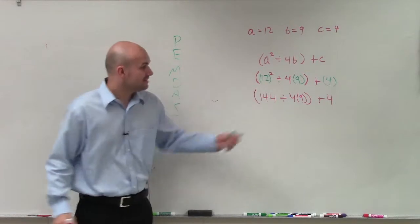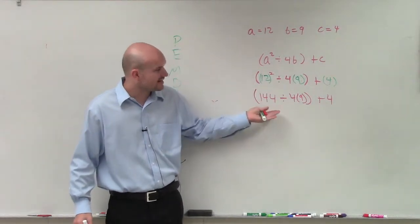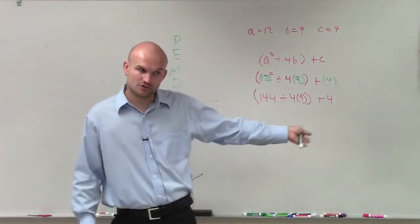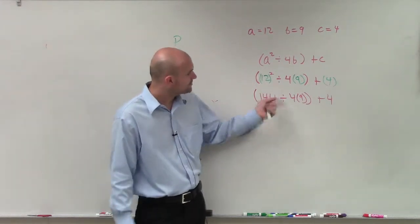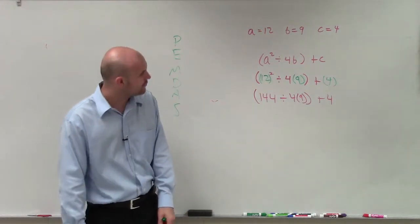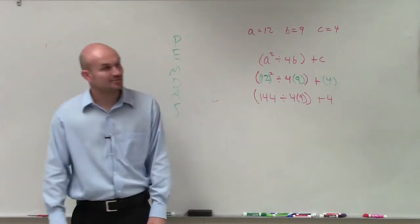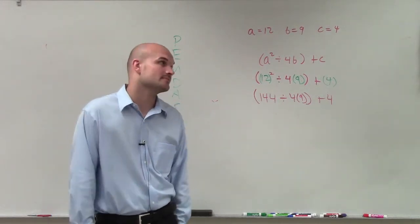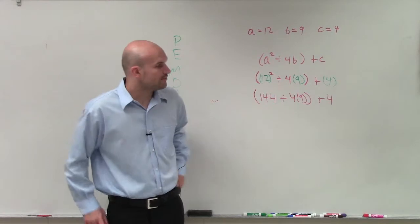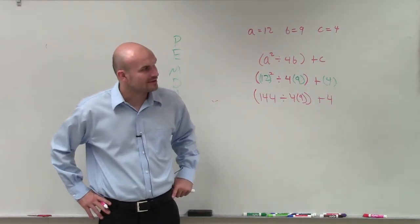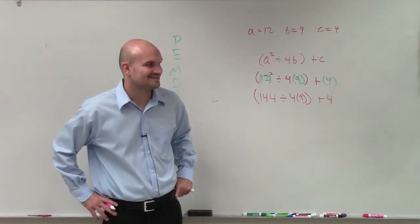All right? So now, inside this, again, we can just work from left to right. All right? 144 divided by 4 is, let's see, we go 40. 144 divided by 4, oh, we have a, oh, hello, you decided to return. Good.